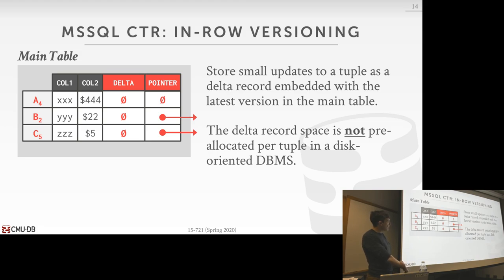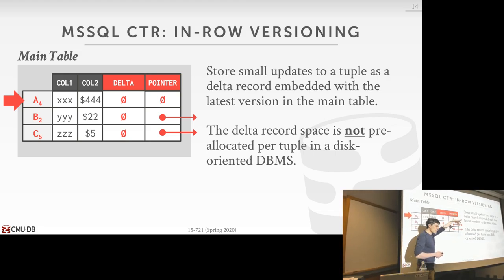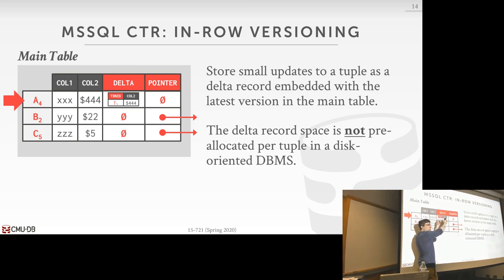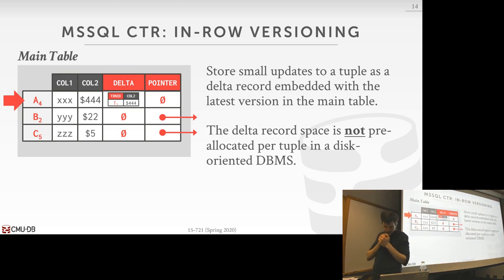With in-row versioning, when updating a tuple instead of copying the old version to the time travel table, the delta record is embedded inline and written to the write-ahead log normally. An important distinction: disk-oriented databases allow variable-length tuples, so they can leave the delta space empty and grab a new slot in the page. In-memory databases require fixed-length primary tuples, so we'd have to pre-allocate delta space for every tuple, limiting the delta to a certain size.